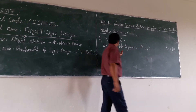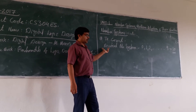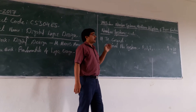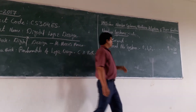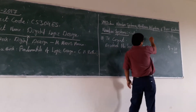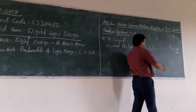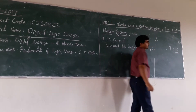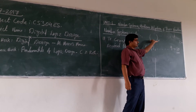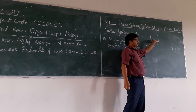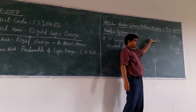So, we say that in the decimal number system, you are having base 10. To represent it, we write 10 as the subscript. This tells us that it is your decimal number system.